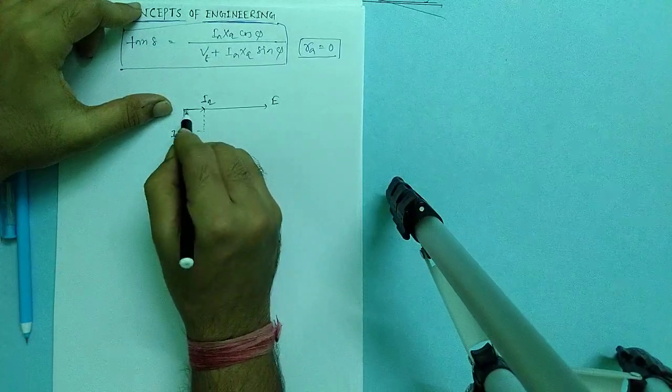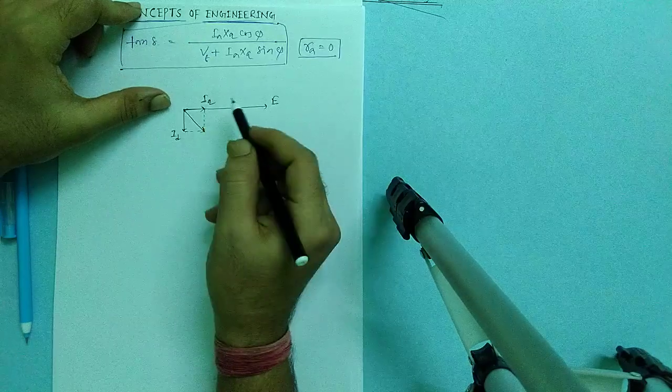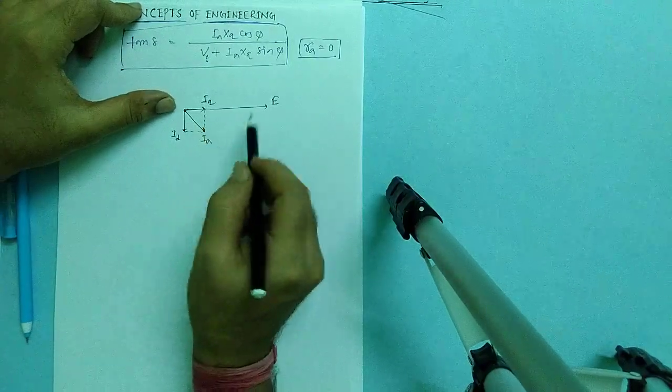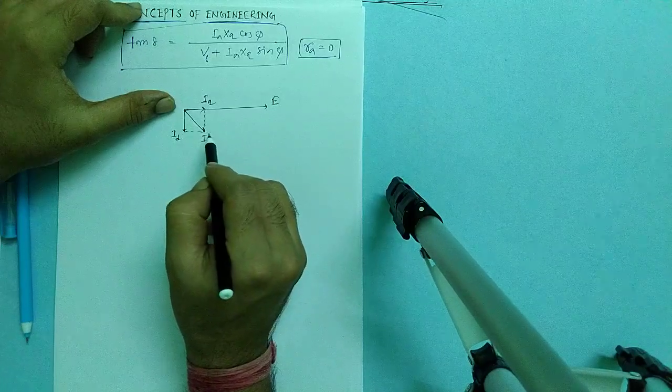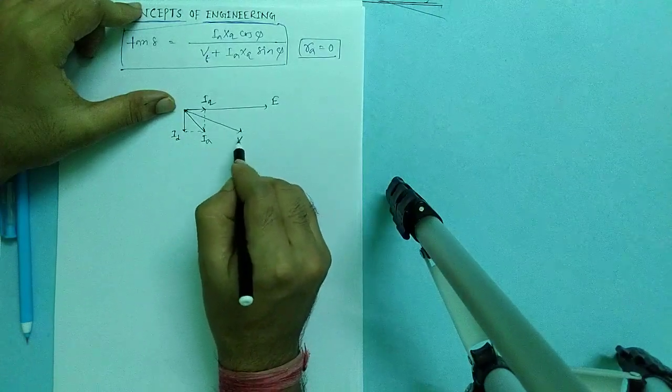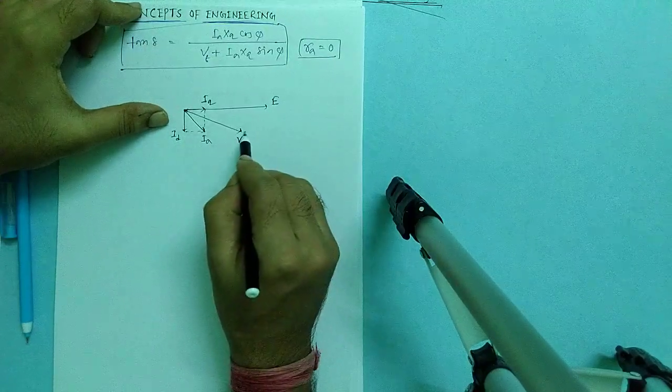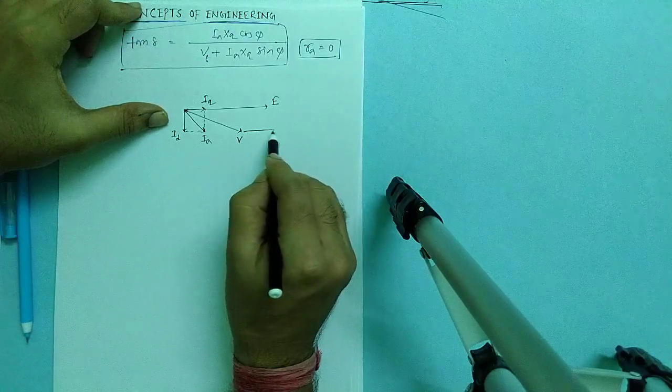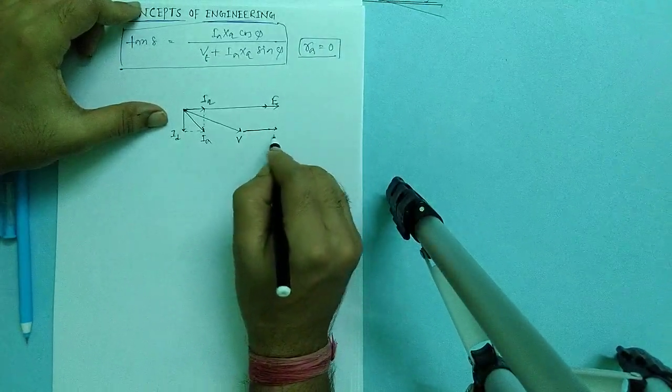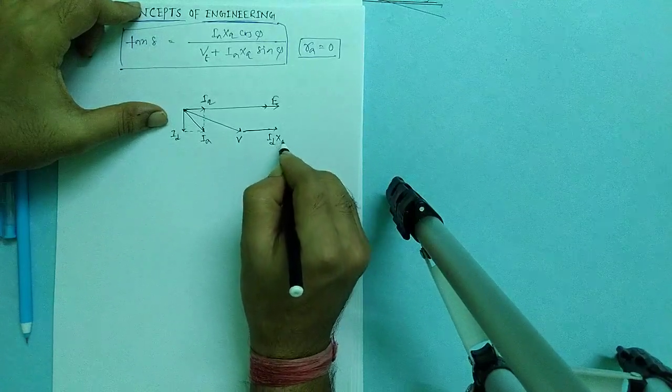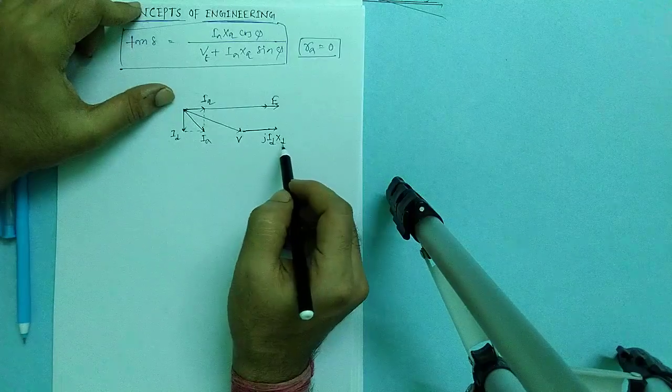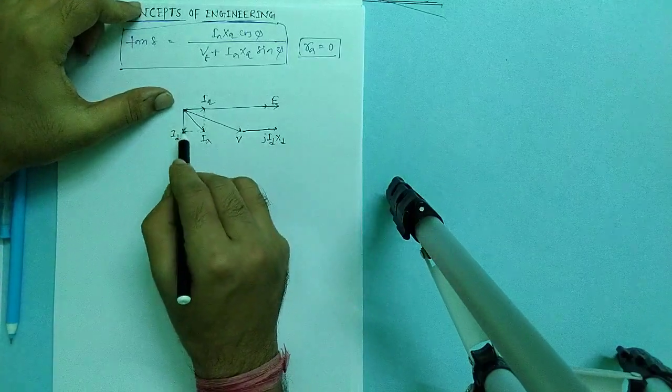This is my e, induced emf of alternator, and this is my i_q, quadrature axis current. As the load is lagging in nature, so i_d will be like that. What will be the load current? The phasor sum of quadrature axis current and direct axis current. So this is my i_a and current is lagging in nature.